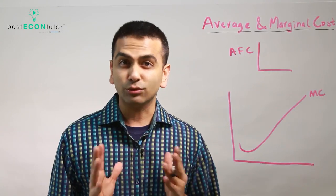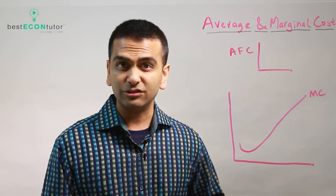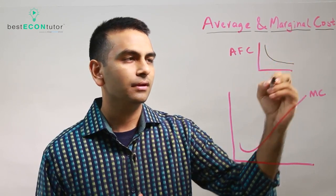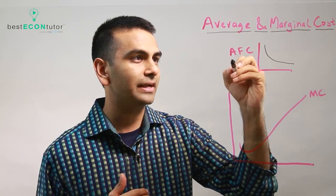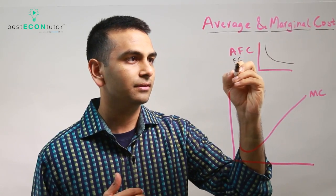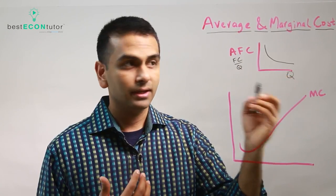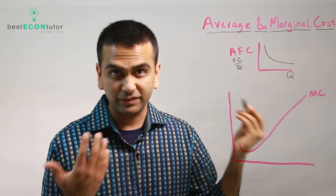If we were to look at the graph of AFC, we'll find that it actually is always decreasing, like this. The reasoning is this. The formula for AFC is simply FC over Q. Now, the x-axis is quantity. And the FC, the fixed cost of your rent, is fixed. Let's say your rent is $1,000.